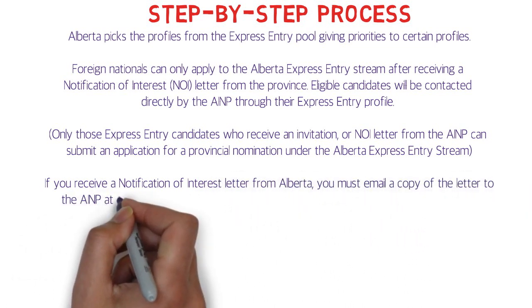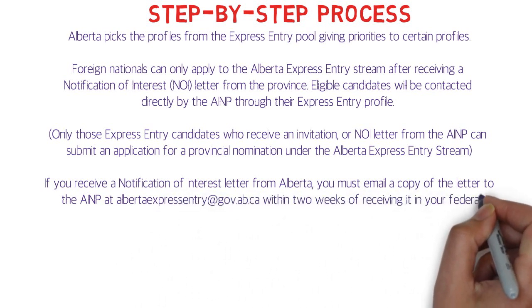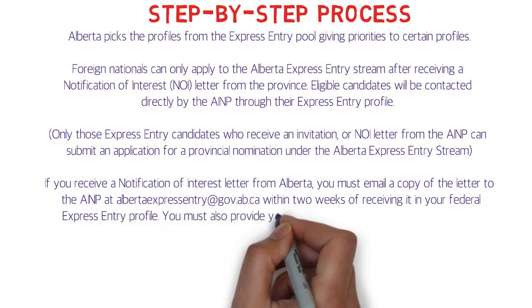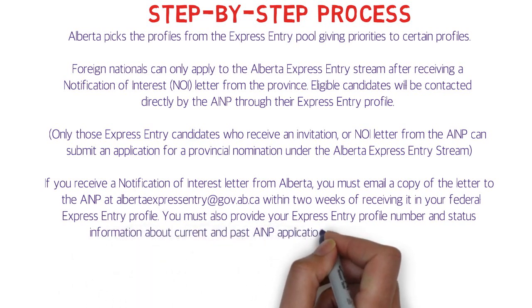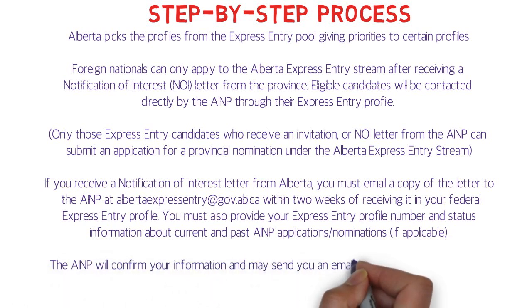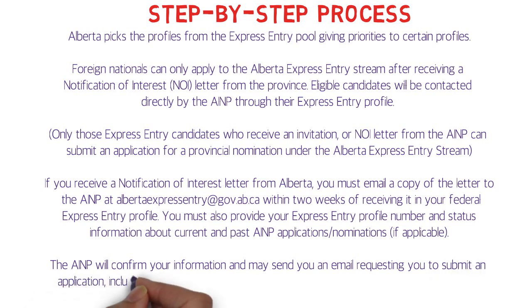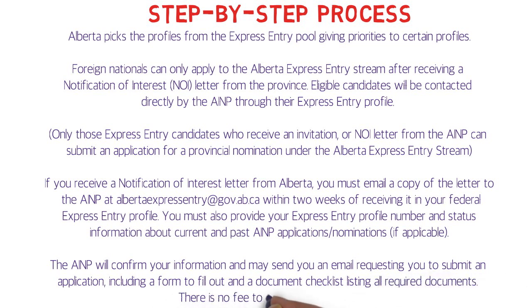If you receive an NOI letter from Alberta, you must email a copy of the letter to AINP at albertaexpressentry@gov.ab.ca within two weeks of receiving it in your federal Express Entry profile. You must also provide your Express Entry profile number, status, and information about current and past AINP applications or nominations if applicable. AINP will then confirm your information and may send you an email requesting you to submit an application, including a form to fill out and a document checklist.